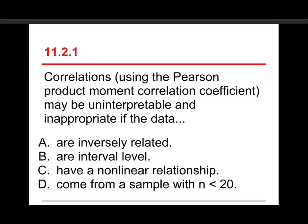The first question is, correlations using the Pearson product-moment correlation coefficient may be uninterpretable and inappropriate if the data: A, are inversely related, B, are interval level, C, have a nonlinear relationship, or D, come from a sample with n less than 20.